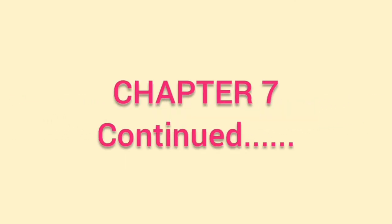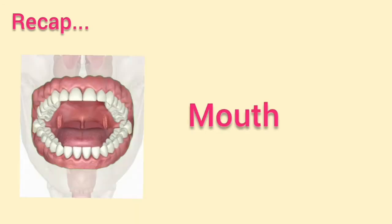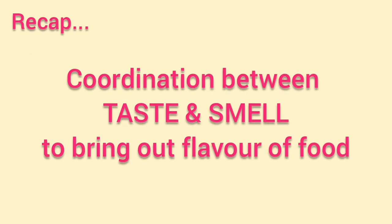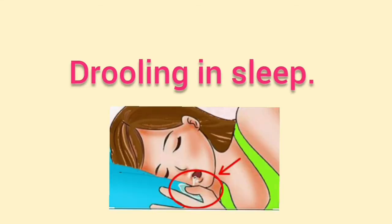Welcome back, students. Let us continue our Chapter 7: Coordination in Life Processes. In our previous video, we learned about how life processes are interlinked, understood the mouth and its function, how the sense of taste and smell are coordinated in the brain to bring out the flavor of food, and the digestion in the mouth — the role of teeth, saliva, and salivary enzymes.